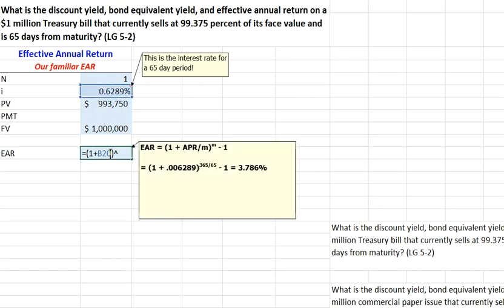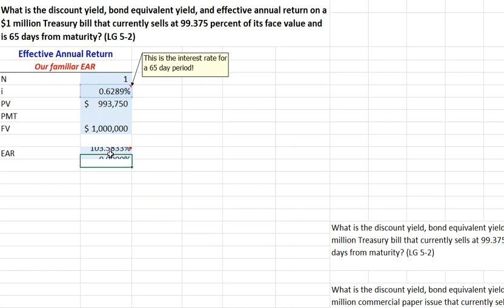So to the 365 divided by 65, that would have given us basically our 1 plus our interest rate. Then we subtract off 1, and there is our effective annual rate.